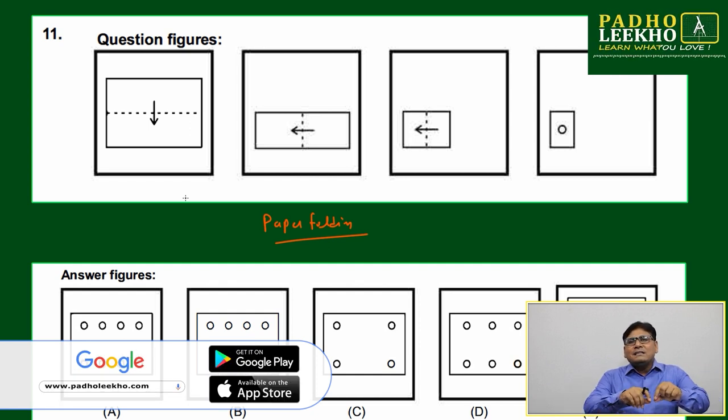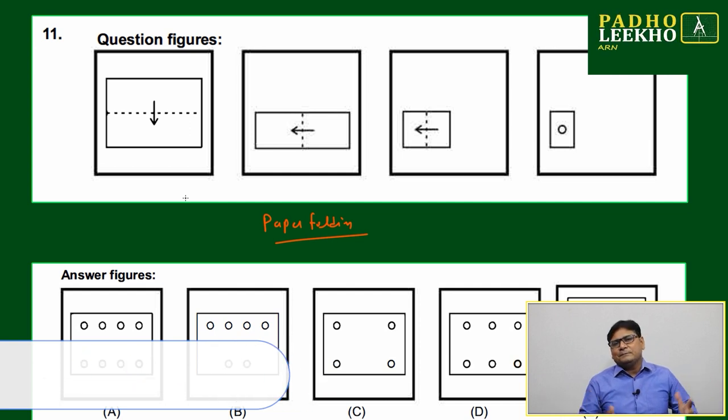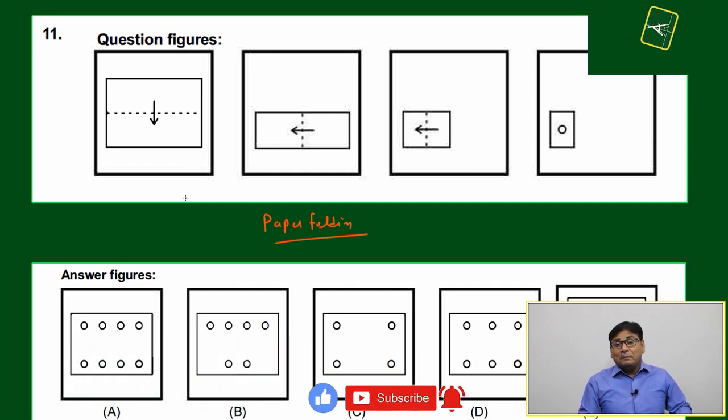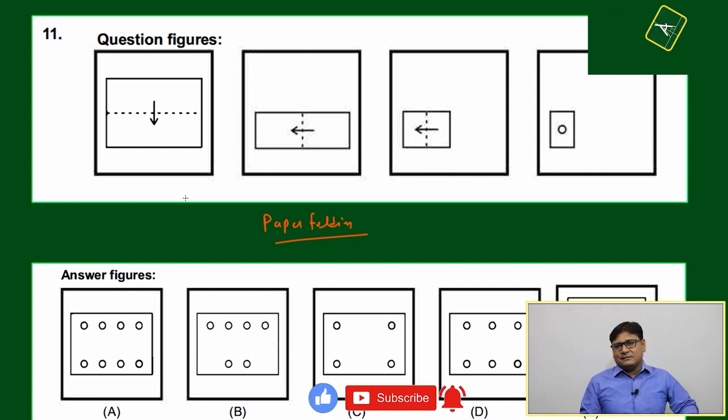Based on the number of punching holes, you will be able to eliminate two or three option choices out of five. I will show you here.